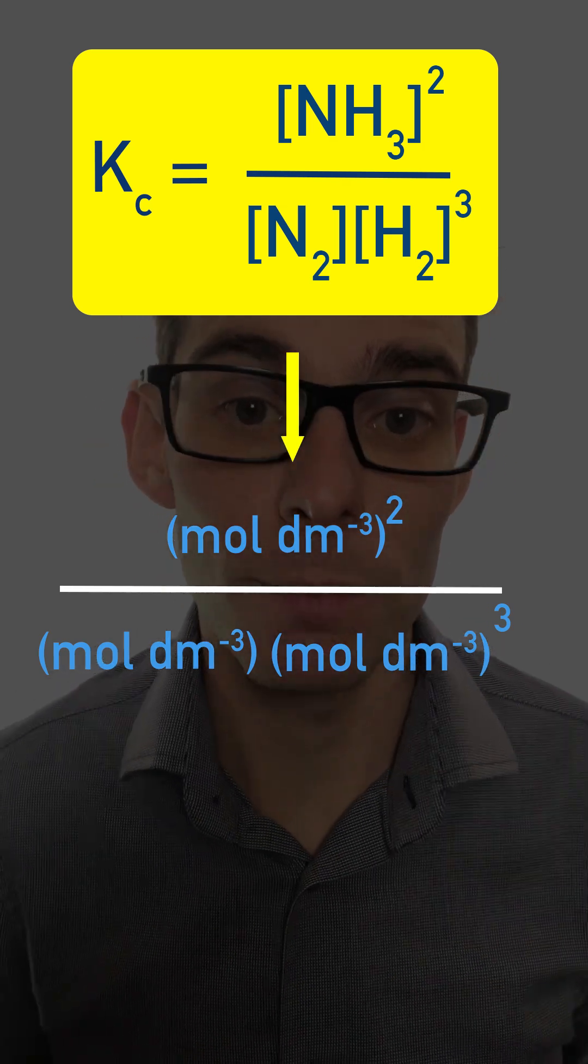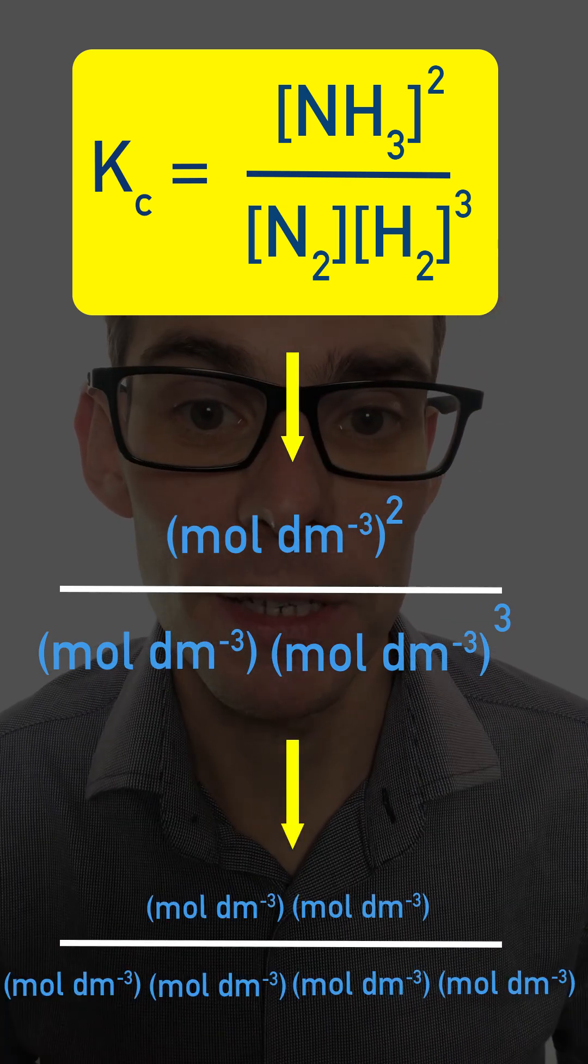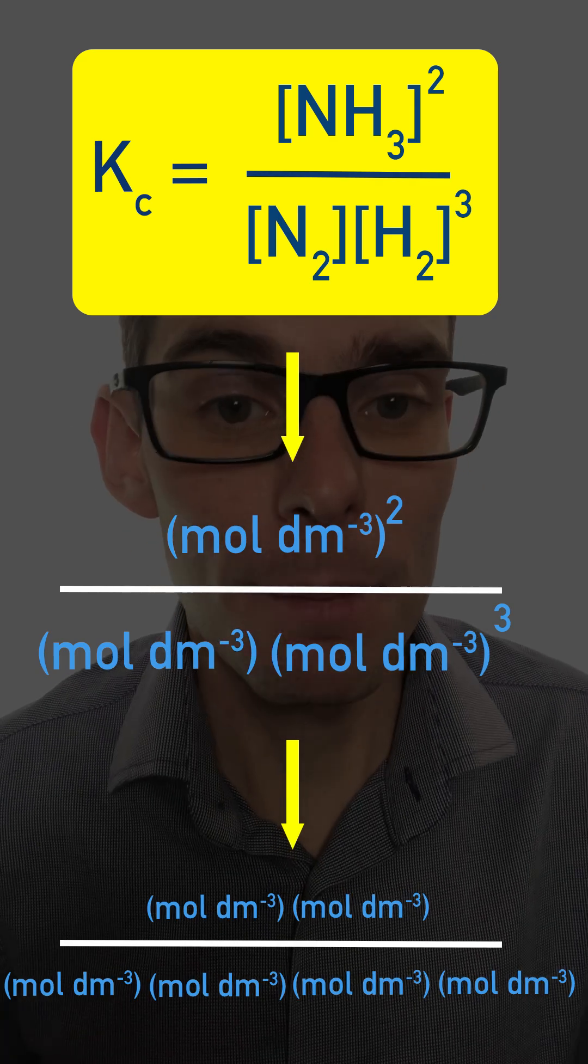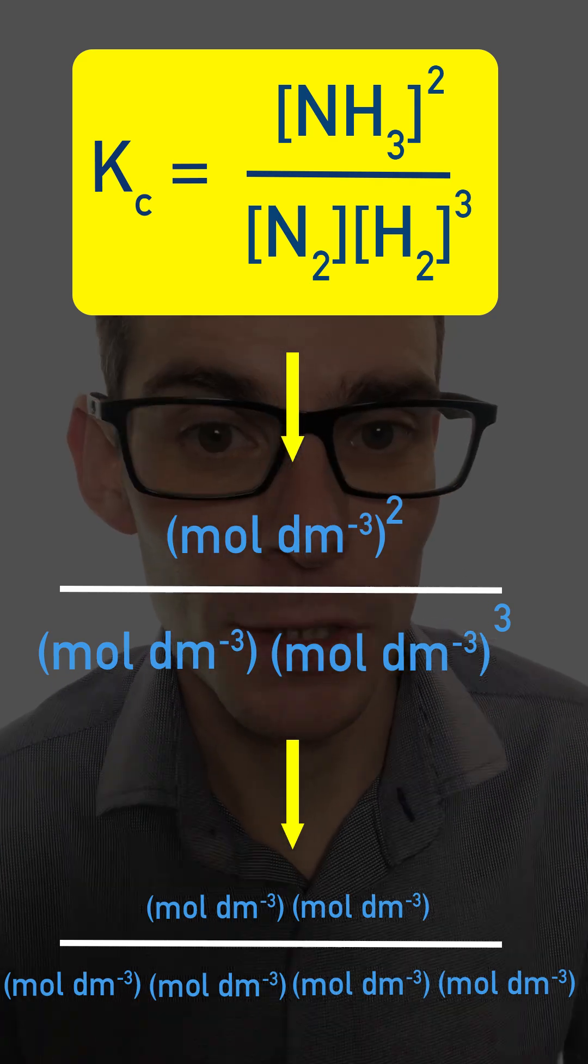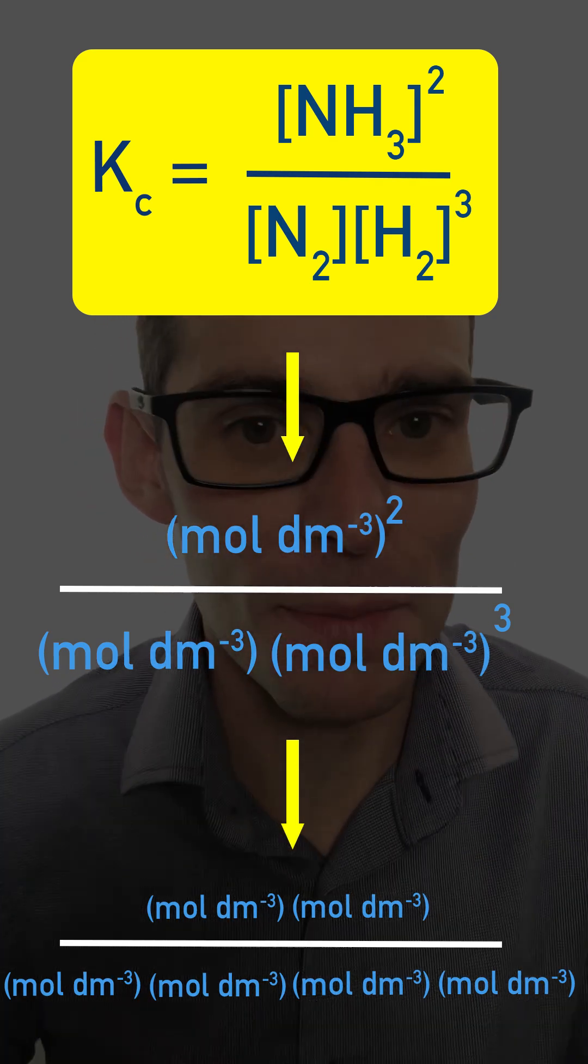Expand these brackets out to give us mole per decimeter cubed times mole per decimeter cubed divided by mole per decimeter cubed times mole per decimeter cubed times mole per decimeter cubed.